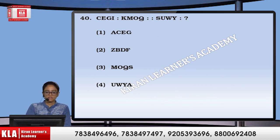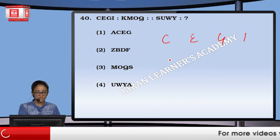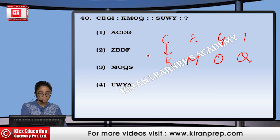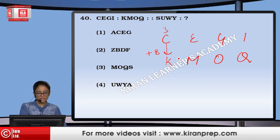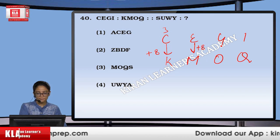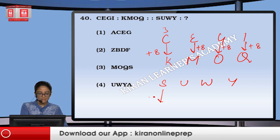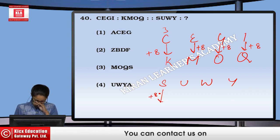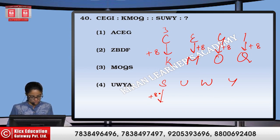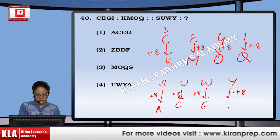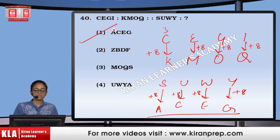Next question: C, E, G, I is written as K, M, O, Q. So C plus 8 gives K. Similarly, each letter has plus 8 applied. For S, U, W, Y: plus 8 gives A, plus 8 gives C, plus 8 gives E, plus 8 gives G. So it becomes A, C, E, G — that means option number 1.